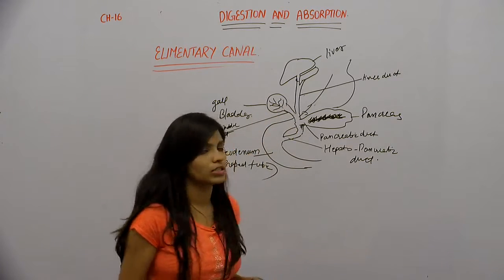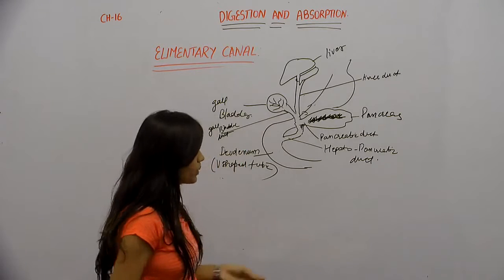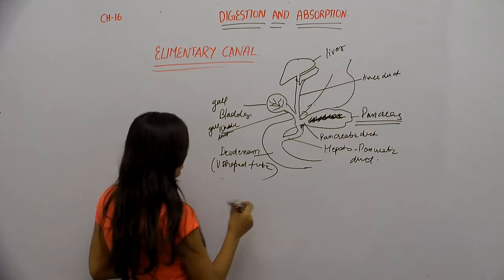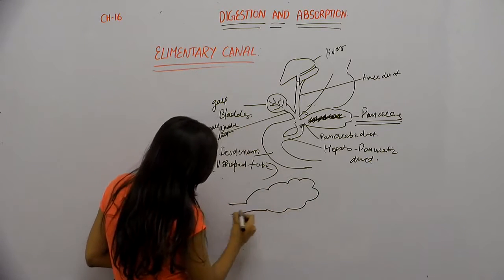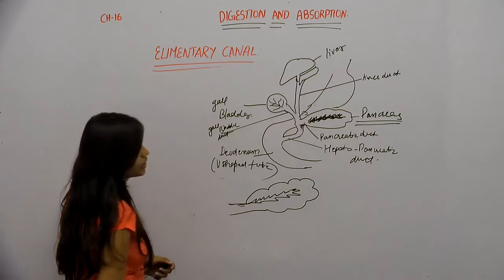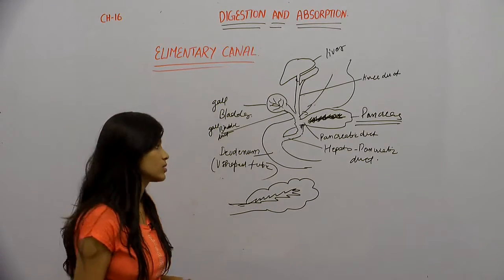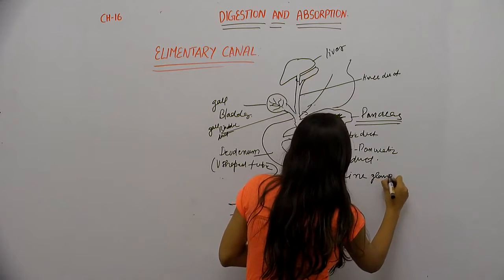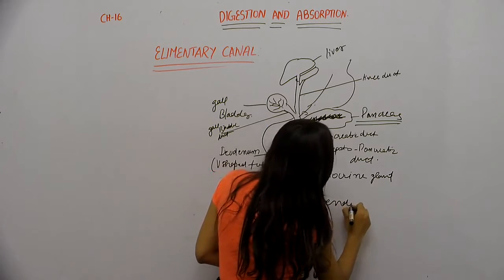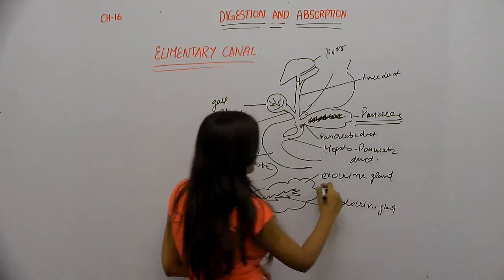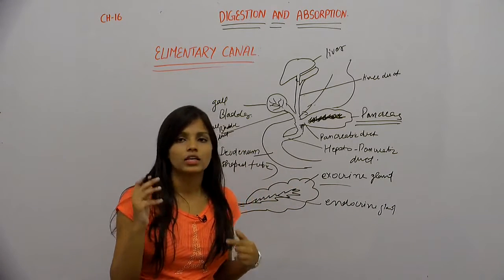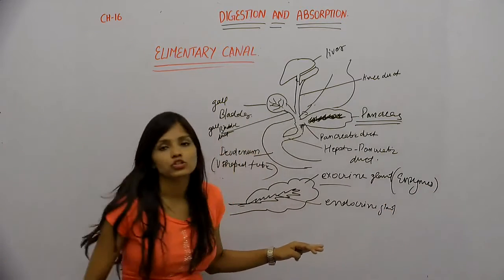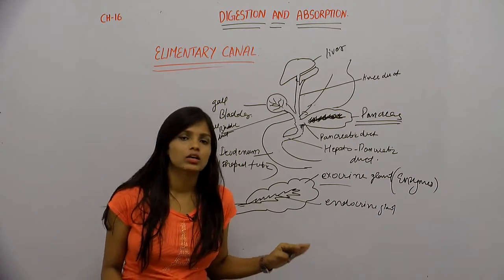The pancreas is a compound organ because it consists of two types of glands: the exocrine gland and the endocrine gland. The function of the exocrine gland is to secrete enzymes, while the endocrine gland secretes insulin and glucagon.